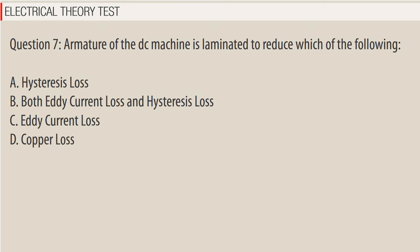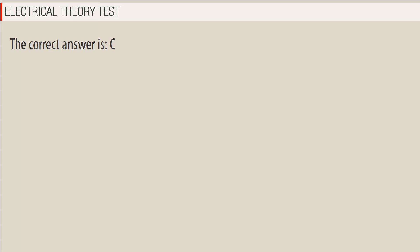Question 7: Armature of the DC machine is laminated to reduce which of the following? A. Hysteresis loss, B. Both eddy current loss and hysteresis loss, C. Eddy current loss, D. Copper loss. The correct answer is C.